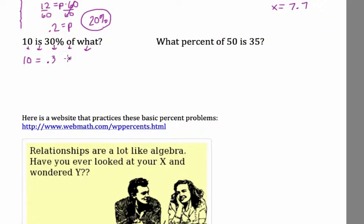'Of' means times, and 'what'—that's our variable, that's our unknown. 10 is 30 percent of what? Okay, I'm just gonna rewrite this a little closer together: 10 equals 0.3 times X.